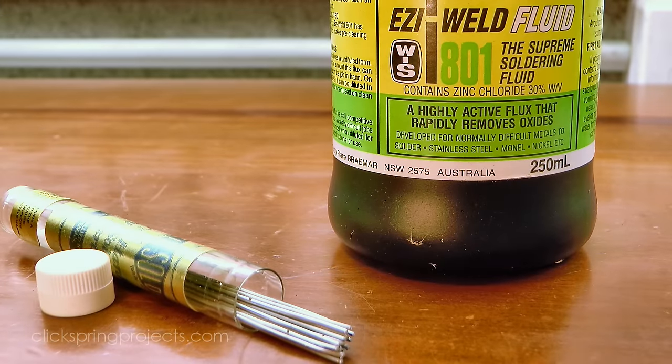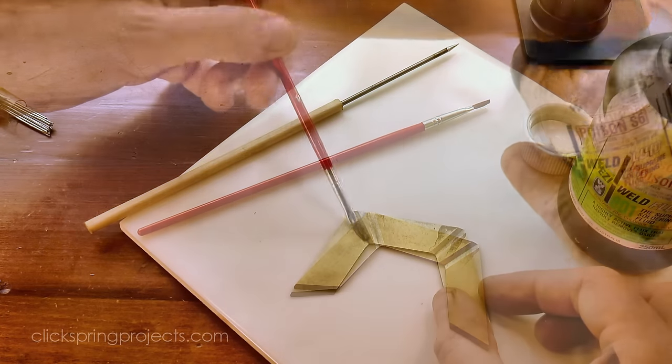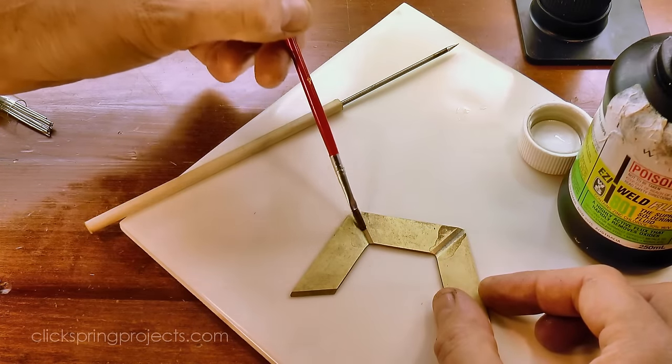Once it's formed to shape, I'll fill the joins with some of this soft solder. I should mention though, it's a one shot bend.